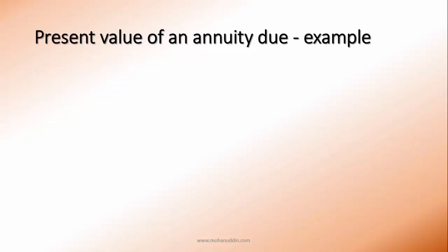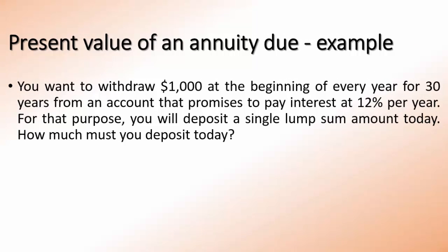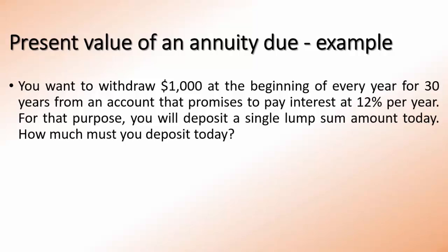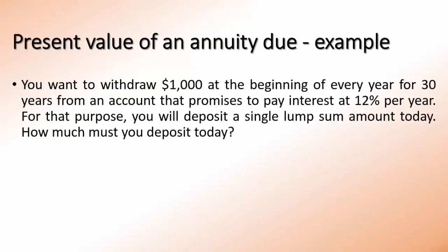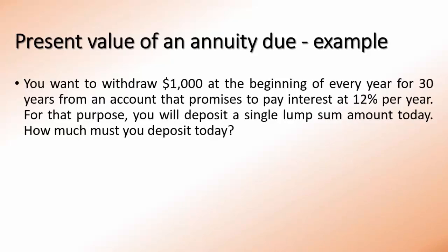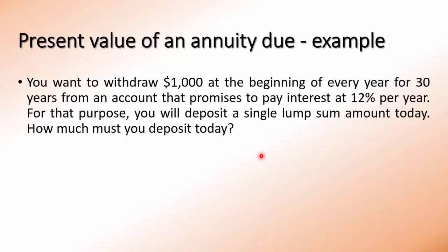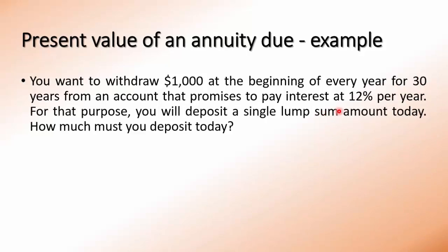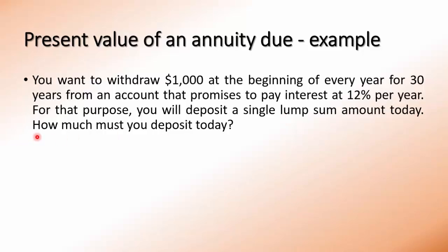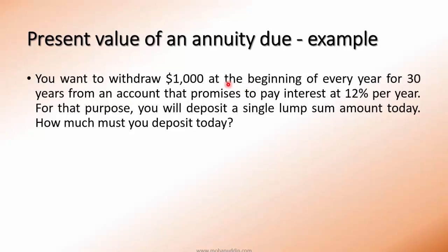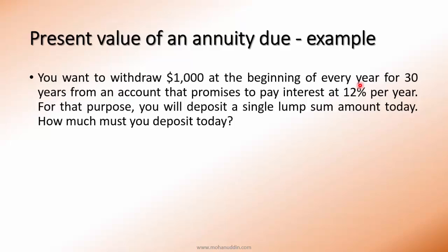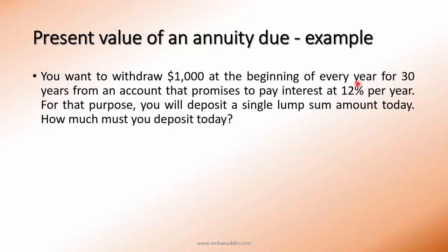To apply this formula, let us look at an example. You want to withdraw $1,000 at the beginning of every year for 30 years from an account that promises to pay interest at 12% per year. For that purpose you will deposit a single lump sum amount today. How much must you deposit today? This problem is similar to the example shown for present value of an ordinary annuity, with withdrawals of $1,000 every year for 30 years at 12% interest — the only difference is withdrawals are at the beginning of the year instead of the end. This is why it is an annuity due, not an ordinary annuity.